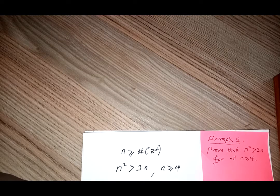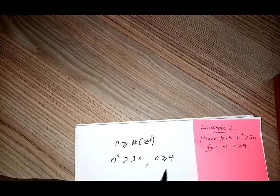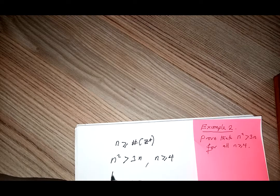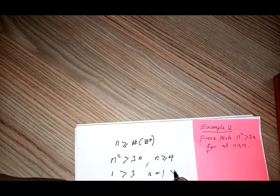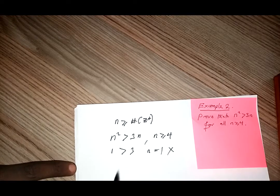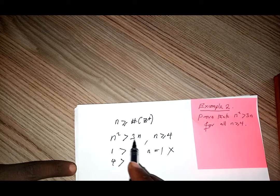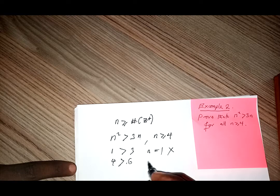What does it mean? We need to find out if this condition is related to this side. What if n is equal to 1? That gives us 1, which is not greater than 3. For n equal to 2, we have 2 squared which is 4, and 3 times 2 is 6. So 4 can never be greater than 6 — for n equal to 2, this is not true.